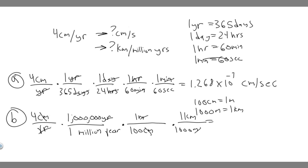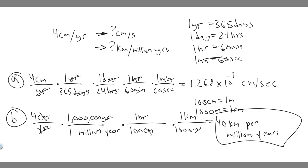So we compute: four times one million, then divide by 100, then divide by 1000. What you get is 40 kilometers per million years. That's your answer to Part B. So Part A was 1.268 times 10 to the minus seven centimeters per second, and Part B is 40 kilometers per million years. Hopefully you found this useful.